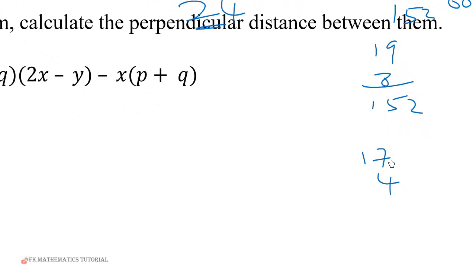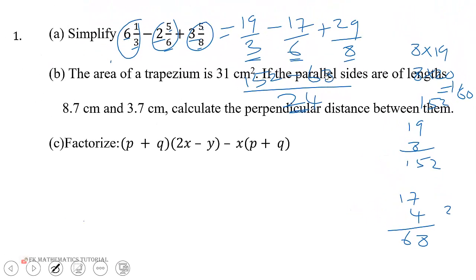So 4 times 17. 4 times 7 is 28, so write 8, remain 2, carry 2. So 4 times 1 is 4, plus 2 is 6. So we get 68.